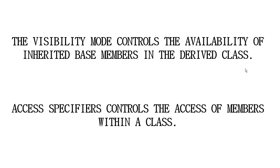Hey guys, welcome to ArcTech. In this video we will talk about visibility mode. Basically, while deriving classes we use visibility mode because it tells the compiler in which way we are deriving the base class. There are three ways: public, private, and protected. It will control the availability of inherited base members. Access specifiers control the access of members within a class, while visibility mode controls the access while inheriting the members.